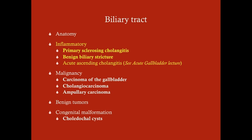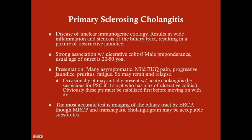Primary sclerosing cholangitis is something you really need to be aware of because it is common. It's a disease of unclear immunologic etiology — we know it's immunogenic in origin, but we don't know exactly what causes it. There is a strong association with ulcerative colitis. Only about three to four percent of patients with ulcerative colitis will ever develop PSC. However, two thirds of patients with PSC also have ulcerative colitis.